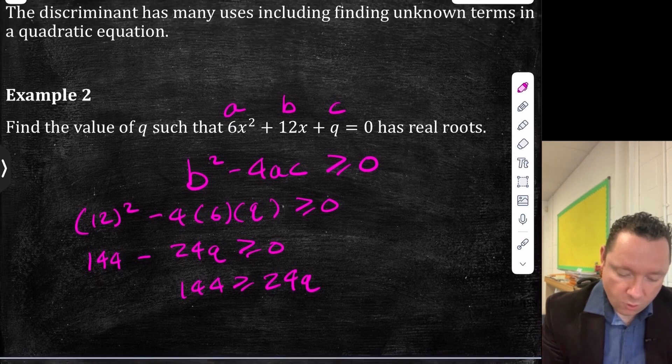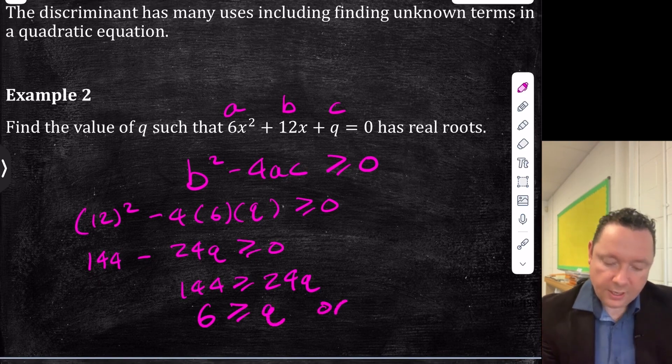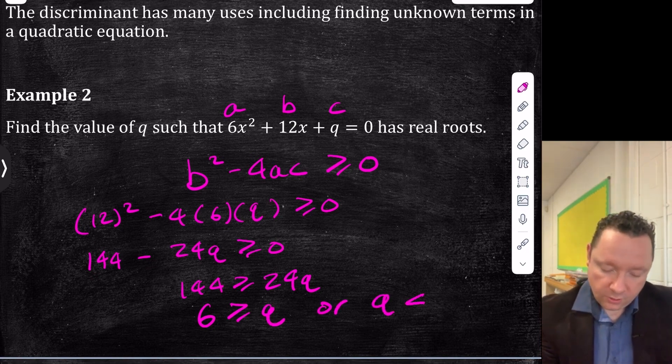So dividing by 24, you get 6 is greater than or equal to q. Or, reading that backwards, q is less than or equal to 6. And we're done there.